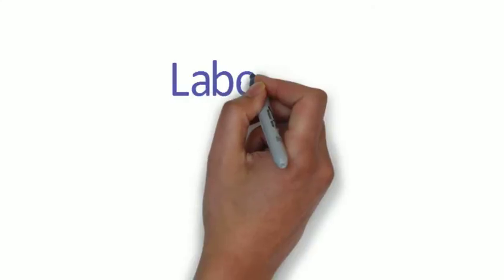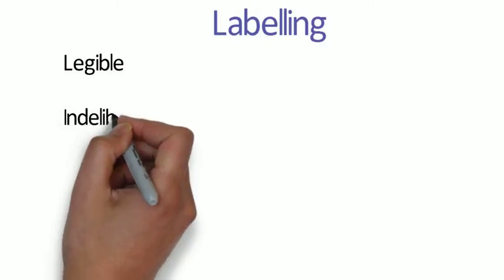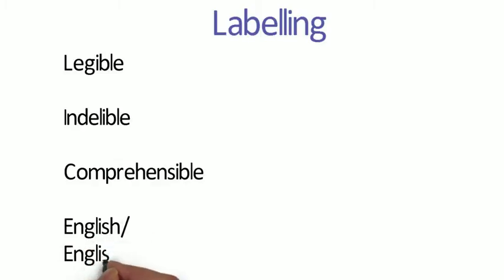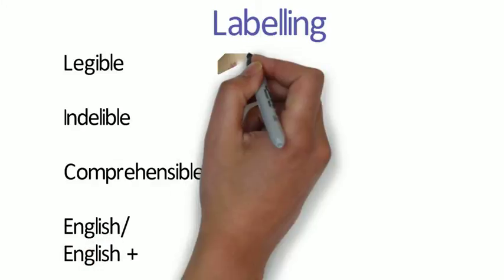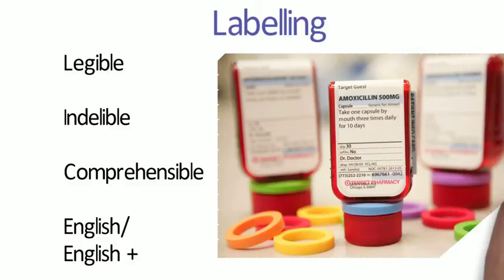The Human Medicines Regulations also have provisions around labelling and containers. Labelling needs to be legible, comprehensible, and indelible. It needs to be in English only, or in English and one or more other languages, providing the same details appear in all languages. For example, products from Europe may have details in German but will also carry additional labels with exactly the same details in English.